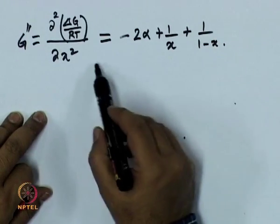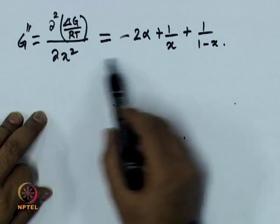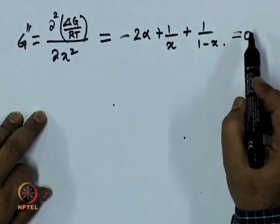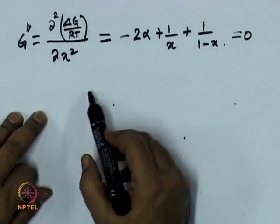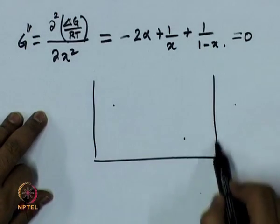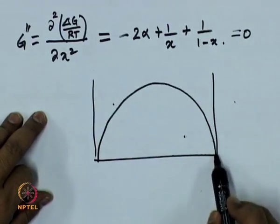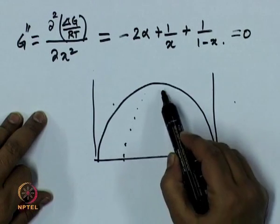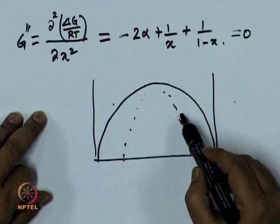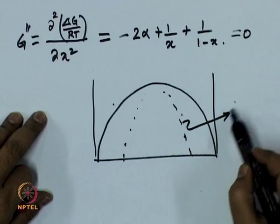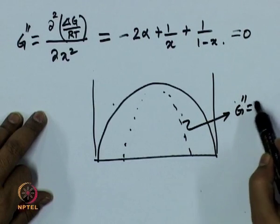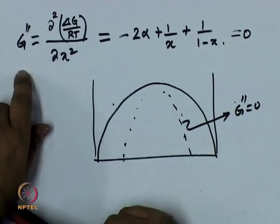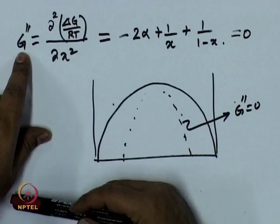We want to find the zeros of this function g double prime — the points where it equals zero are the spinodal points. We have the miscibility gap, and within that gap we identify the points at which g double prime equals zero. So we want to find the zeros of this function.